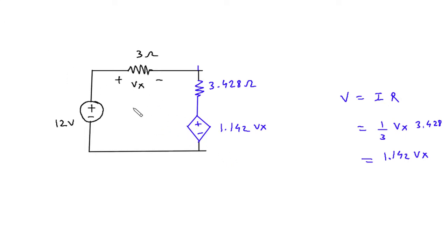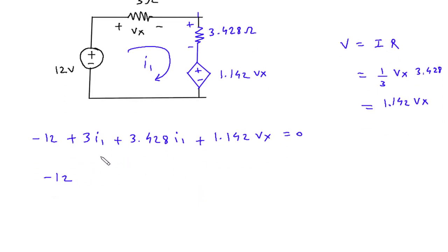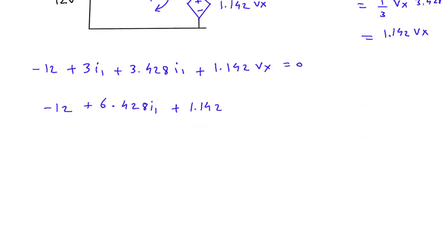Now here we can apply KVL. Let's say this is current I1. Starting from this point: minus 12, then plus 3·I1, then plus 3.428·I1, plus 1.142·Vx equals 0. This gives minus 12 plus 6.428·I1 plus 1.142·Vx equals 0, where Vx is equal to 3·I1.